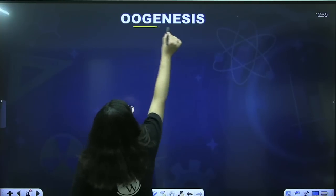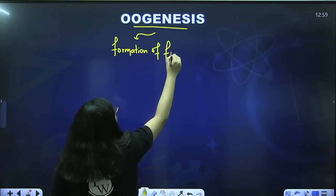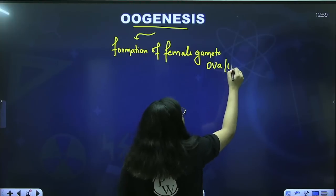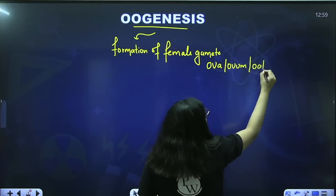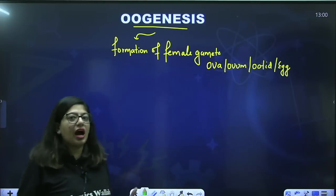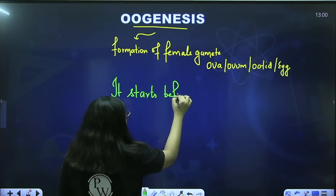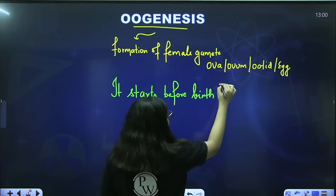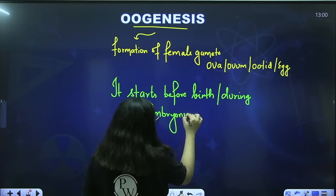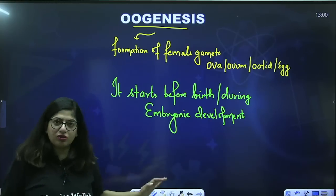Oogenesis: it is the formation of the female gamete. The name of the female gamete is ovum — singular ovum, also known as oocyte, and sometimes called egg. When does oogenesis start? It starts before birth, or we can say during embryonic development. That's the first difference between spermatogenesis and oogenesis.